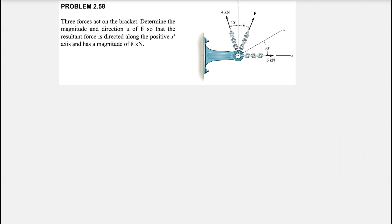So as always we can start with the free body diagram. So what the question is asking is, we have three different forces that are acting. So if this is our x and y axis, we have this 6 kN force, we have F which is making angle theta with the y axis, and we have this 4 kN force which has an angle of 15 degrees.